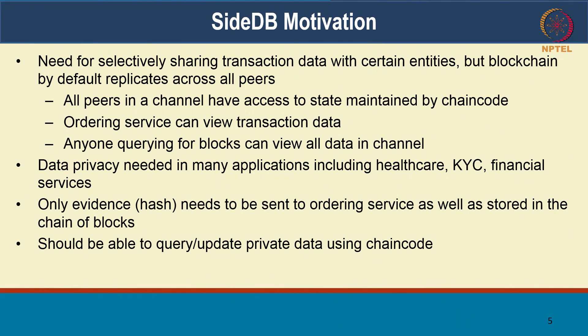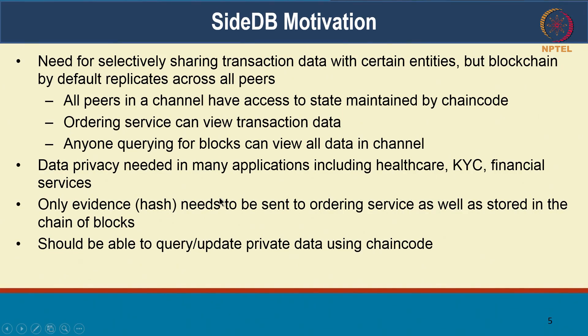SideDB also gives you privacy with respect to the ordering service — even the ordering service will not see the private data, they will only see a hash. Anyone querying just the blocks of transactions will also not see the private data. Across the peers, the blockchain, as well as the orderer, we can ensure data privacy of specific private data. This comes in handy for many applications where there are stringent compliance, audit, and regulatory requirements, such as healthcare, KYC, insurance, and many financial services use cases. The way it does that is: only the evidence of the private data — maybe a hash — is going to be on the transaction and will be seen by the ordering service. All the other information is kept private to a subset of the authorized peers.